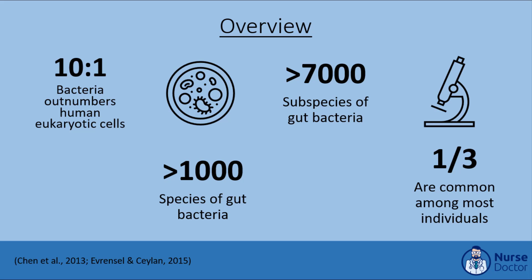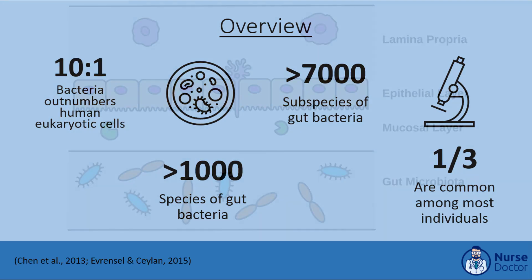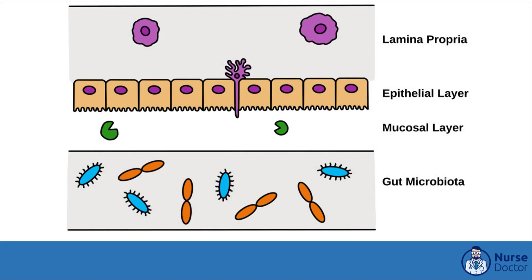The bacteria in the gut outnumber the body's cells 10 to 1, and this collection of bacteria is referred to as the microbiome. Gut bacteria have been estimated to consist of greater than 1,000 species and greater than 7,000 subspecies. One-third of the microbiota are common among most individuals while the rest differs, giving each of us a unique microbial identity.